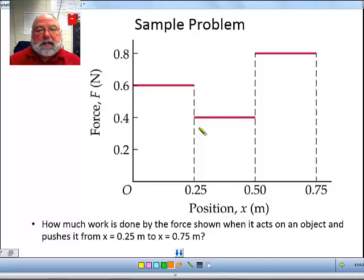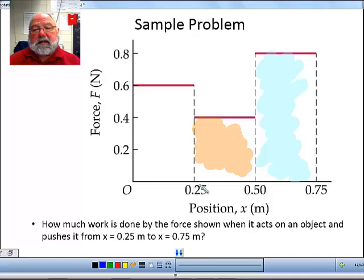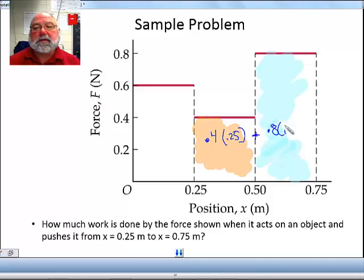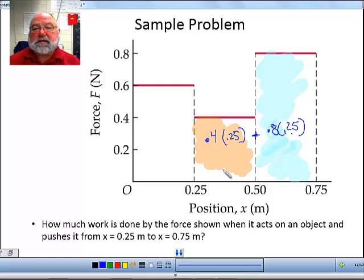Okay, so I'm going to identify the areas that I'm interested in. So this is area one, and this is area two. And that covers the displacement from 0.25 to 0.75. So we're going to calculate the area under the curve. So the area of this rectangle is force, which is 0.4, times the displacement, which is 0.25, plus the area under this curve, which is the force is 0.8 times the displacement, which is still 0.25.